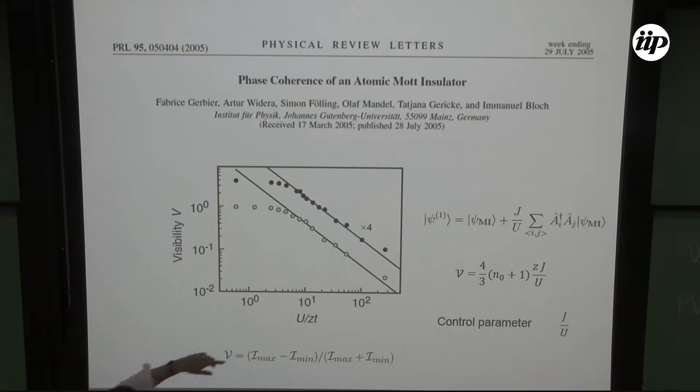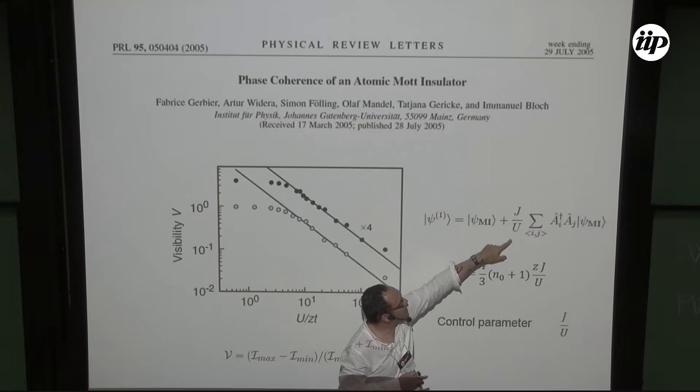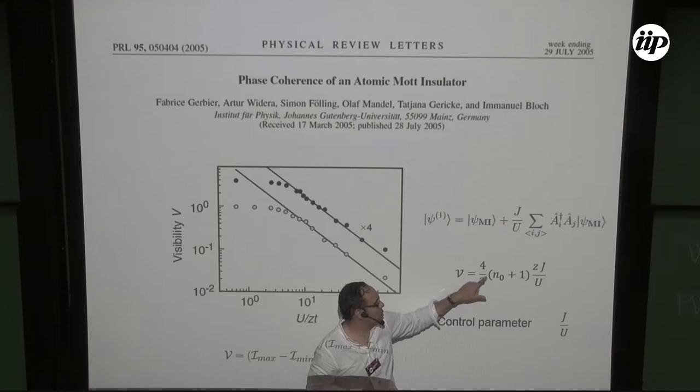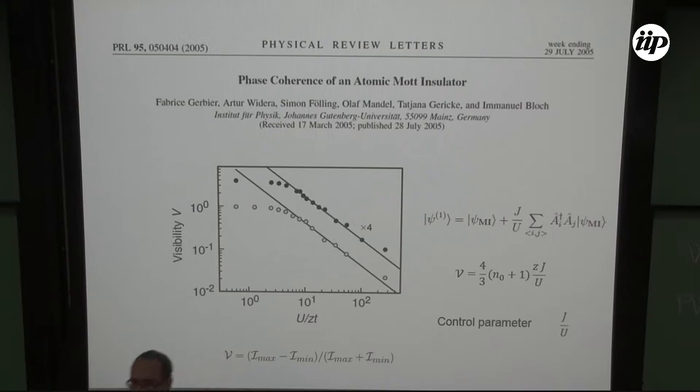This can be derived by expanding around the Mott insulator state using first-order perturbation theory. You take the Mott state, apply the small control parameter J/U, compute the mean momentum distribution, plug it into the visibility, and end up with a beautiful expression proportional to this control parameter. The prefactor depends on the integer filling and the coordination number — keep this in mind, as our final expression depends only on this prefactor.